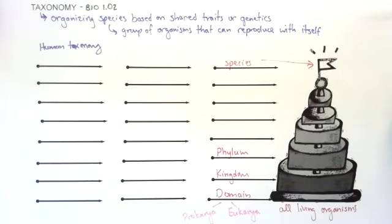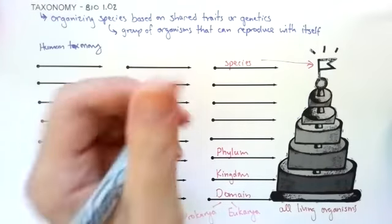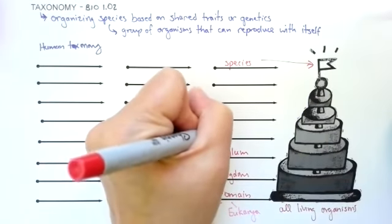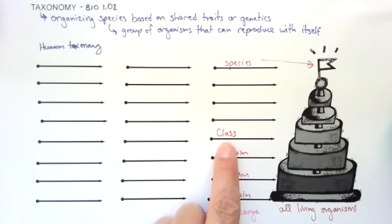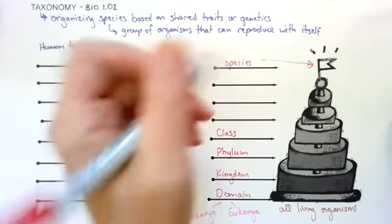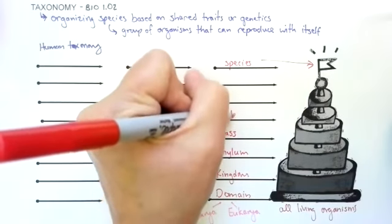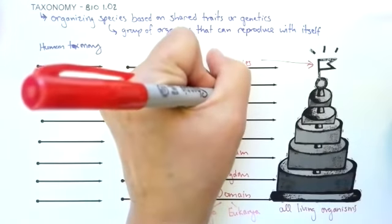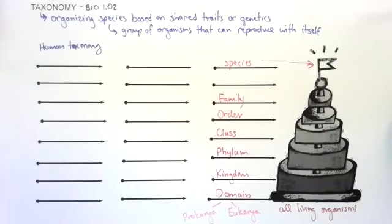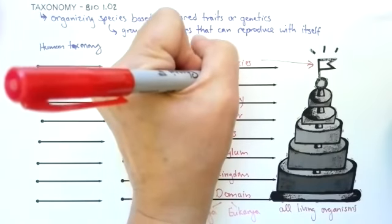From there, we go to a class. In phylum chordata, there's different classes. After class, we have order. After order, we have family. We don't really do a lot with order and family, but genus and species, we do.